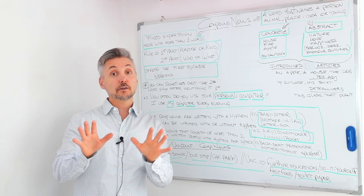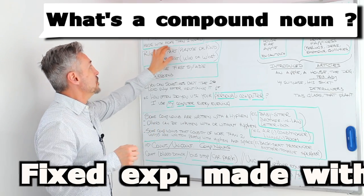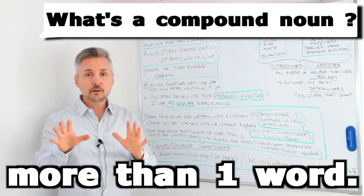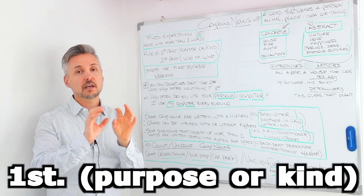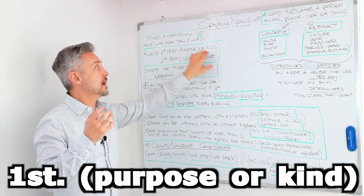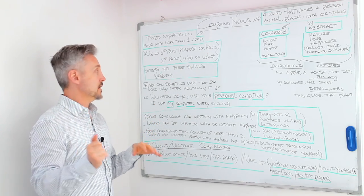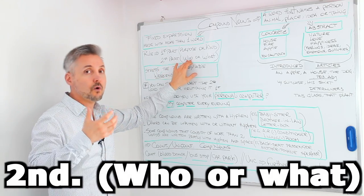I said that we're going to talk about compound nouns. It's a fixed expression made with more than one word. So, the first rule to follow is that the first part of the compound noun usually is a purpose or kind. I will give you some examples later on. The second part usually is who or what.